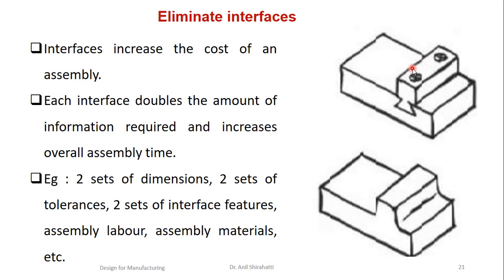The next principle is to eliminate interfaces. Interfaces increase the cost of assembly — each interface doubles the amount of information required and increases overall assembly time, creating two sets of dimensions, two sets of tolerances, two sets of interference features, assembly labor, assembly material, etc. For example, if two parts are screwed together, you need two dimensions and two sets of tolerances with an interference fit. Instead, a single part — either machined or forged — eliminates that interface and its complications.